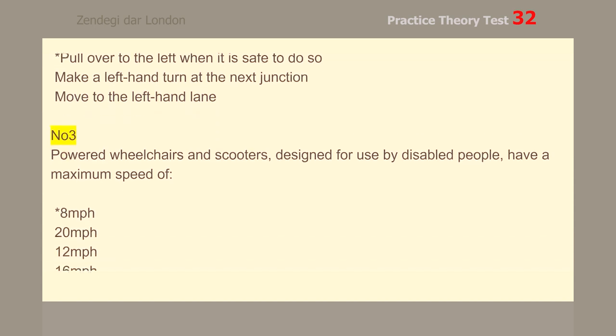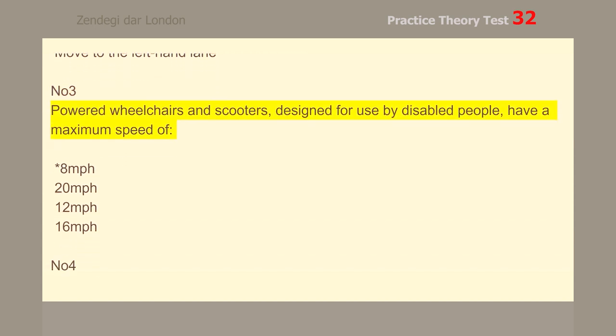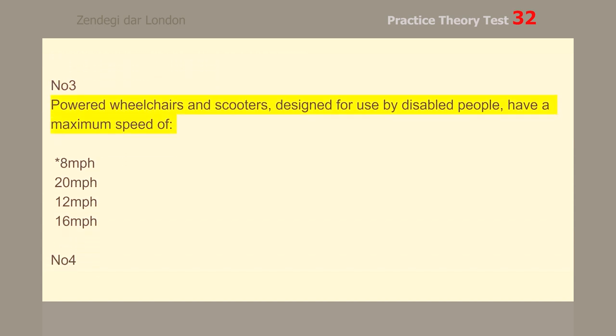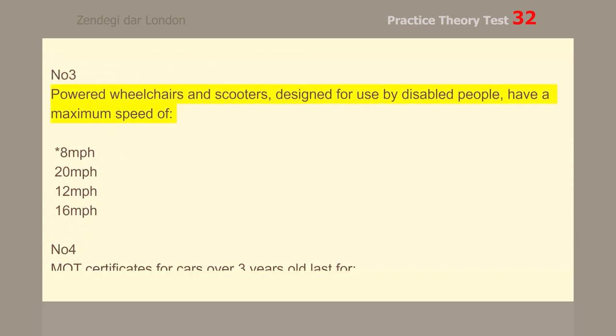Number 3. Powered wheelchairs and scooters, designed for use by disabled people, have a maximum speed of 8 mph.